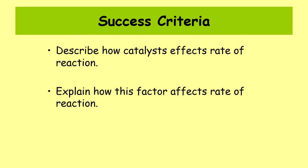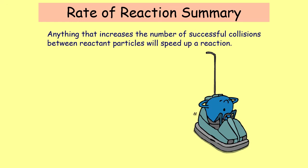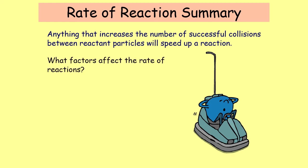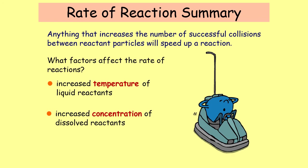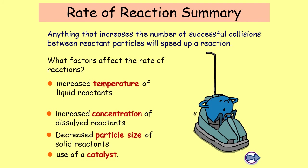Now we'll look at some past paper questions, but first a summary of rates of reaction. Anything that increases the number of successful collisions between reactant particles will speed up a chemical reaction. The factors that affect the rate of reaction: increasing temperature increases rate; increasing concentration increases rate; decreasing particle size increases rate; and using a catalyst increases rate.